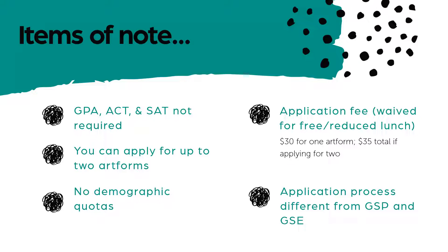GSA is one of three Governor's School programs in Kentucky, along with the Governor's Scholar Program and the Governor's School for Entrepreneurs. Note that our application processes are very different. GSA's application process has less formal school involvement than GSP's — a student can apply for GSA without any kind of approval from their school. Schools do not nominate students for GSA, and while we encourage students to consult with teachers and counselors, their role is generally limited to completing recommendation forms.